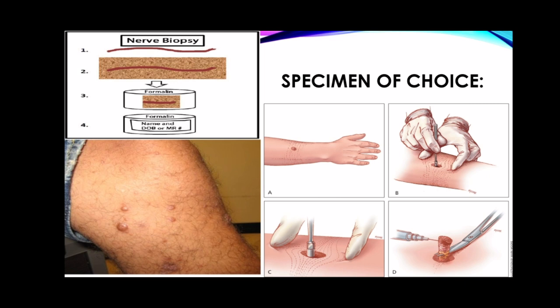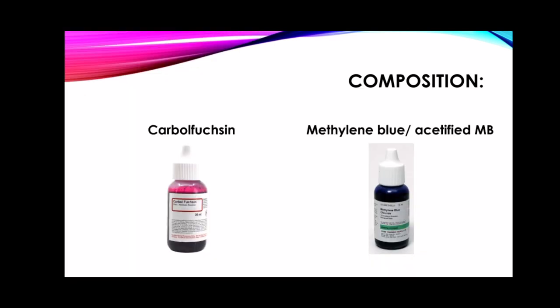The fixative agent used for Wade-Fyth technique for leprosy bacilli is formalin, and the sections must be paraffinized. The composition of Wade-Fyth or Phyth-Faraco staining: carbolfuchsin serves as the primary stain, while the counterstain used is methylene blue or acetified methylene blue. Acetified methylene blue consists of powdered methylene blue, 99 ml of water, and 1 ml of glacial acetic acid.